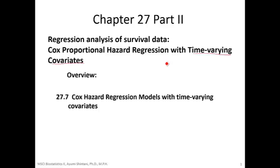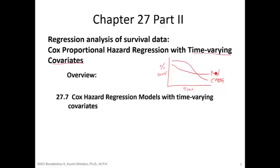In the previous lecture, we talked about Cox with time-varying covariates in the situation where we looked at the effect of CABG over time on survival. The CABG group — patients treated with CABG surgery versus medically treated patients — and we saw the effect of CABG changed over time. One solution is to cut follow-up time and compute two different hazard ratios: a hazard ratio less than 1 in the early period where CABG is working, and a hazard ratio greater than 1 in the later period where CABG stopped working.